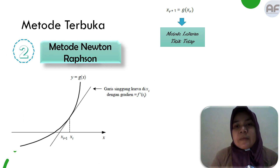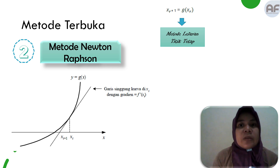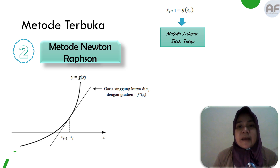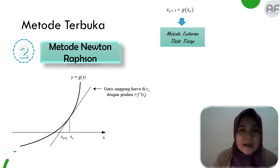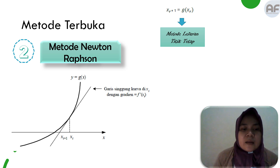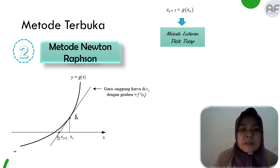Pada metode lelaran titik tetap, cara mencari x_{r+1} adalah dengan mensubstitusikan nilai x_r ke fungsi g(x_r). Sedangkan pada metode Newton-Raphson cara mencari x_{r+1} sedikit berbeda. Kita menurunkan rumusnya menggunakan grafik. Terdapat sebuah garis AB yang menyinggung sebuah kurva dengan persamaan g(x).